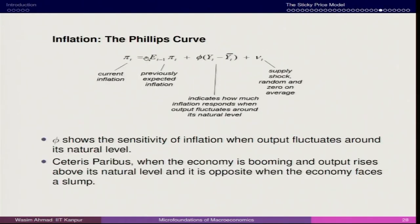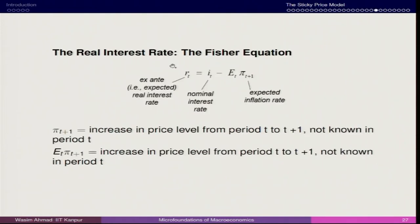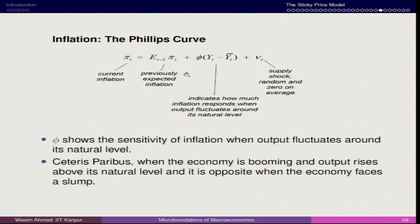The second component is the Phillips curve, which comes from the supply side. Here, current inflation πt equals the previously expected inflation Et-1[πt] plus φ·(Yt − Yt-bar), where (Yt − Yt-bar) is the output gap. The coefficient φ shows how much inflation responds when output fluctuates around its natural level. Yt-bar is the natural level of output — the output achieved at full employment equilibrium with no deviation — and this is the most ideal scenario.